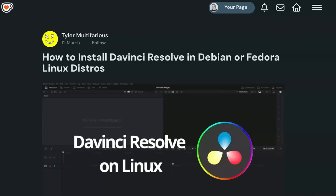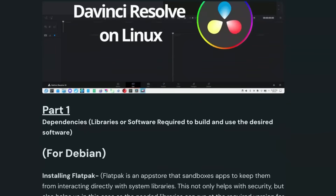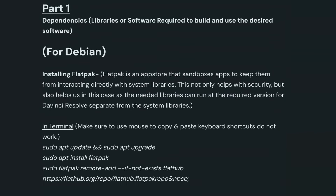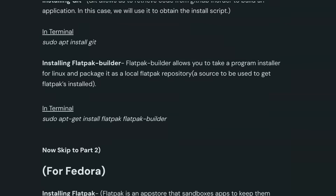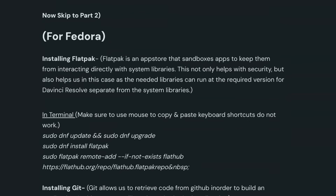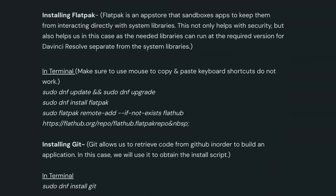I installed OBS for streaming — that worked flawlessly. But the next step was DaVinci Resolve. I would not have been able to install this software successfully without the help of channel supporter Tyler Multifarious. He made a step-by-step guide — I'll link it below if you're curious. That guide helped me successfully install and use DaVinci Resolve on Linux Fedora 41. If you're using another distribution, this method might not work for you, but this is my specific use case.